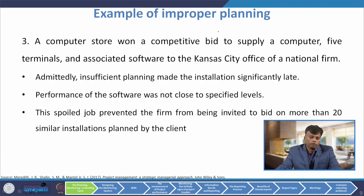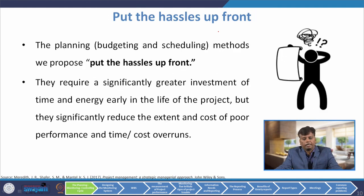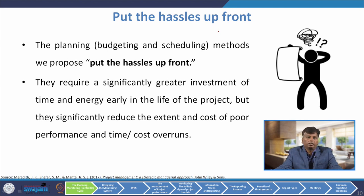A computer store won a competitive bid to supply a computer, five terminals and associated software to a Kansas City national firm. Insufficient planning made the installation significantly late and the performance of the software was not close to specified levels. This spoiled job prevented the firm from being invited to bid on more than 20 similar installations planned by the client. The planning, budgeting and scheduling method proposed here is to put the hassles up front — requiring a significantly greater investment of time and energy early in the project life, but significantly reducing the extent and cost of poor performance and time and cost overruns.